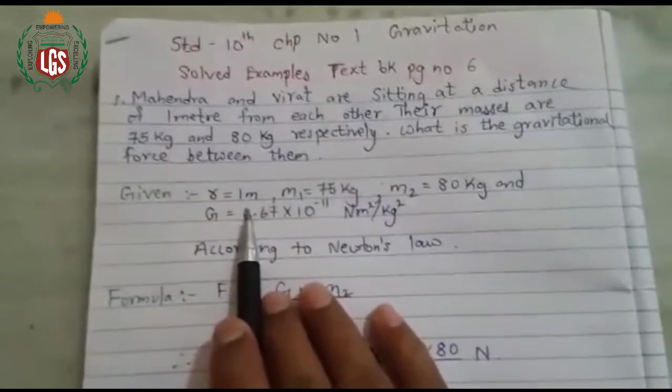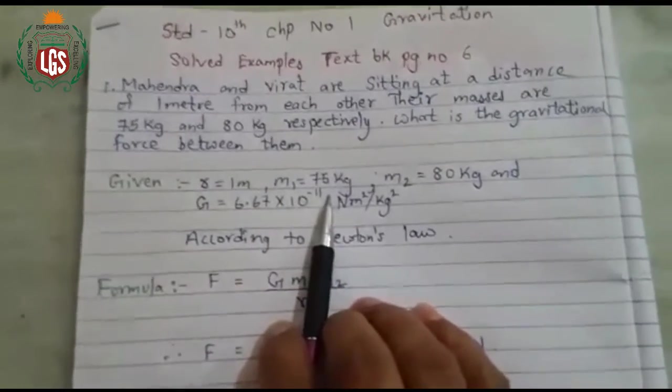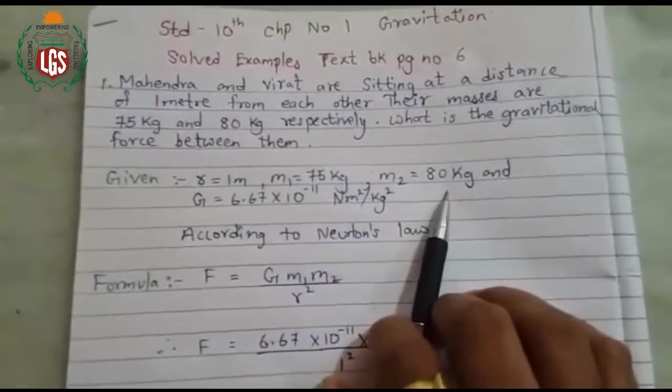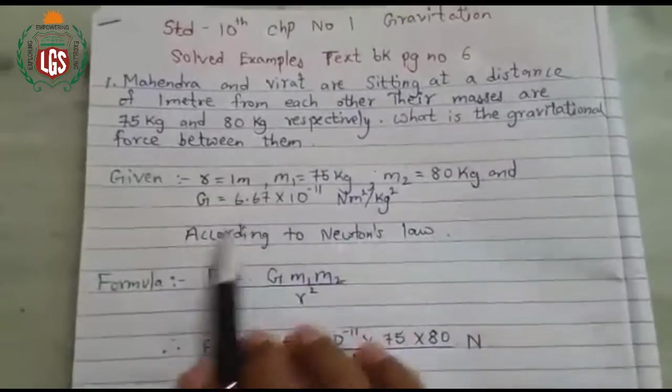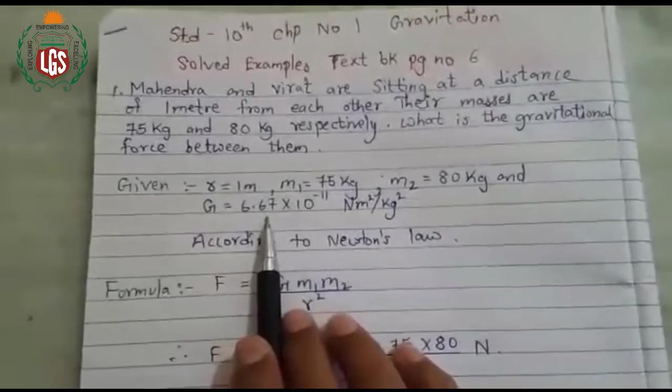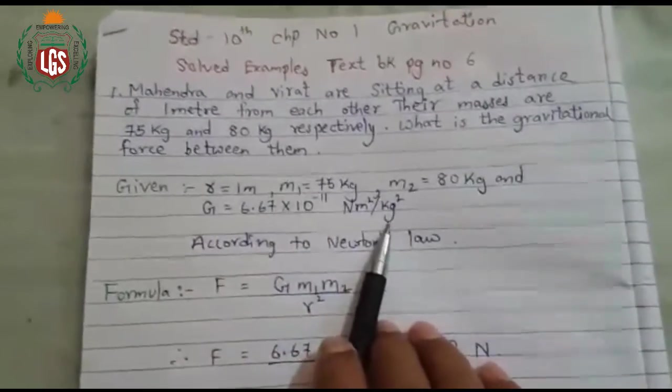Given data is: R is equal to 1 meter, M1 that means mass of Mahendra is 75 kg, M2 is 80 kg that means Virat's mass is 80 kg. And the universal gravitational constant G is 6.67 into 10 raise to minus 11 newton meter square per kg square.